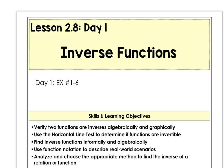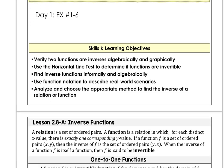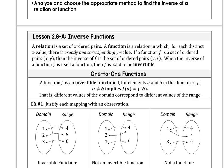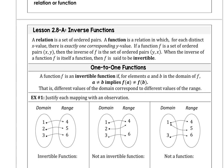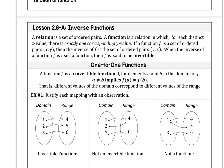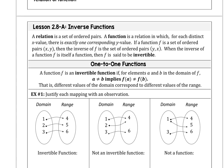Hey there AP PreCalc students. It's Miss Adams from Flamingo Math. We're looking at lesson 2.8, the first day talking about inverse functions. A relation is a set of ordered pairs, and a function is a special relation where for every distinct x value there's exactly one corresponding y value. If a function f has the ordered pairs x and y, then the inverse function of f will have the ordered pairs y and then x. When the inverse of a function is itself a function, then f is said to be invertible.